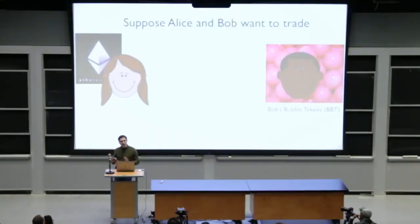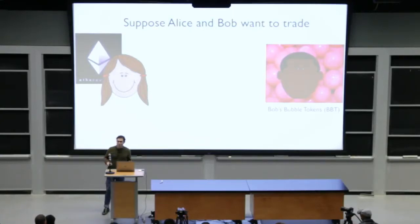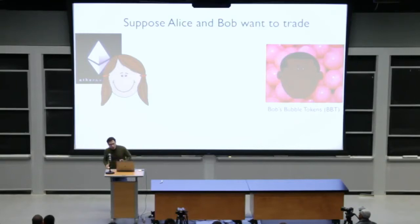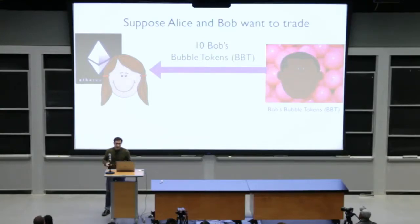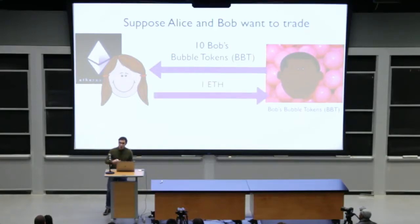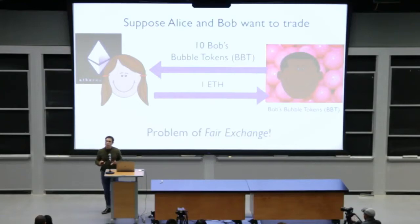Imagine that Alice and Bob want to perform a transaction together. Bob has a new token — we'll call it Bob's Bubble Token — that he'd like to sell to Alice for Ether, and Alice would like to buy some. There's a little problem: if Bob sends the tokens first, he has no guarantee that Alice is going to pay him the Ether. And if Alice sends the Ether first, she has an analogous problem — she doesn't know she's actually going to get the tokens. This is the classic problem of fair exchange that we encounter in many blockchain settings.